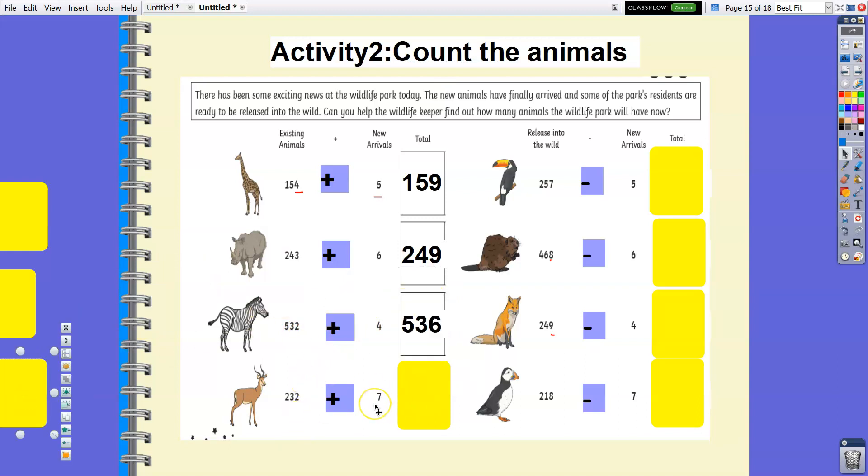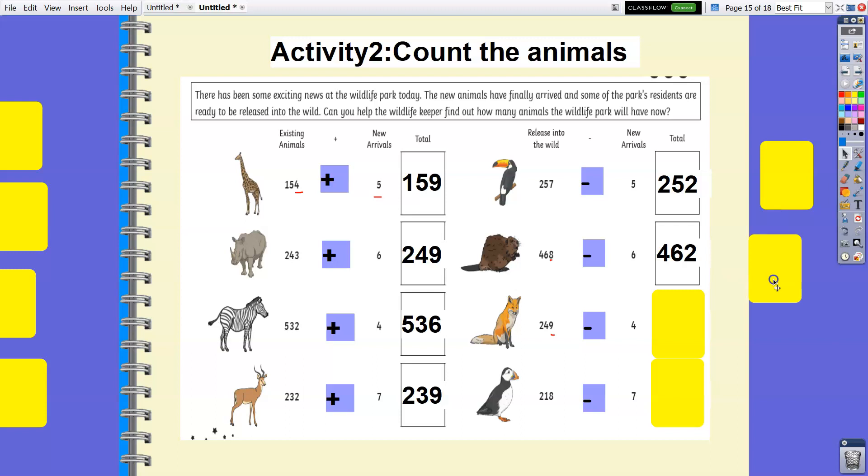232 plus 7: 2 plus 7 is 9, the answer is 239. Taking this example for subtraction: 257 minus 5, 7 minus 5 is 2, the answer is 252. 468 minus 6: 8 minus 6 is 2, the answer is 462. 249 minus 4: 9 minus 4 is 5, the answer is 245. 218 minus 7: 8 minus 7 is 1, so the answer is 211. As easy as that.